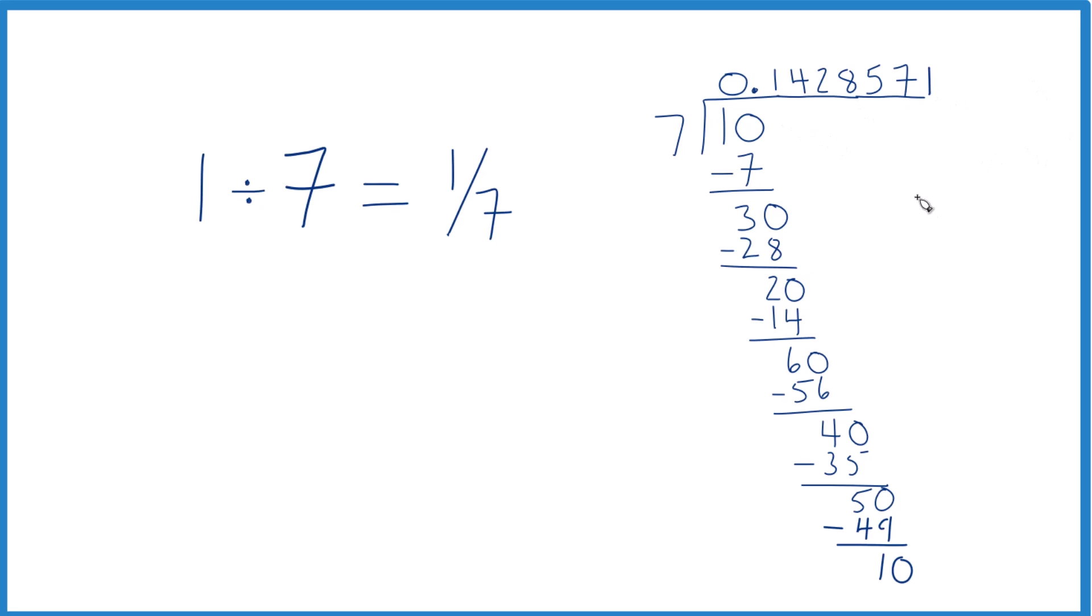You could round this to 0.143 or 0.1429. But when we divide 1 by 7, the fraction 1 seventh and the decimal 0.142857, which then repeats.